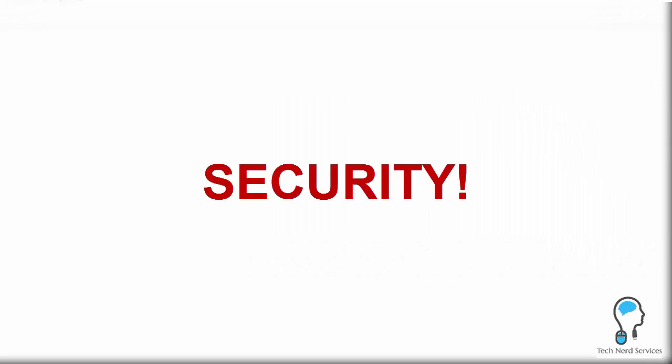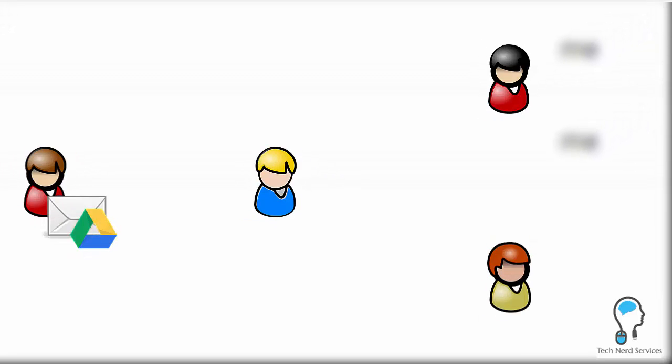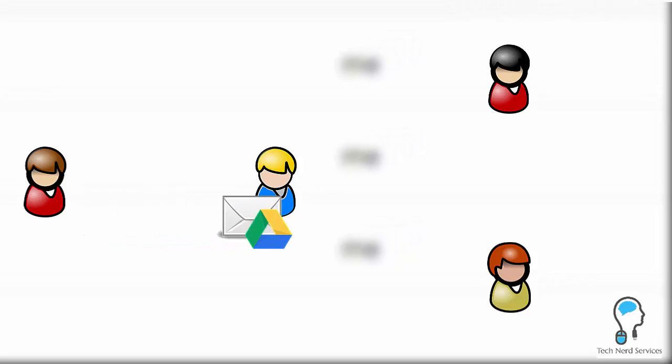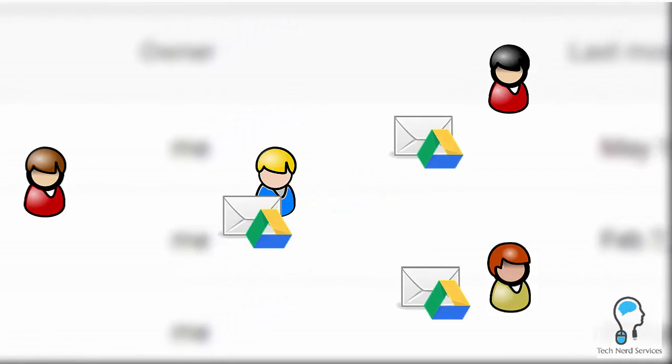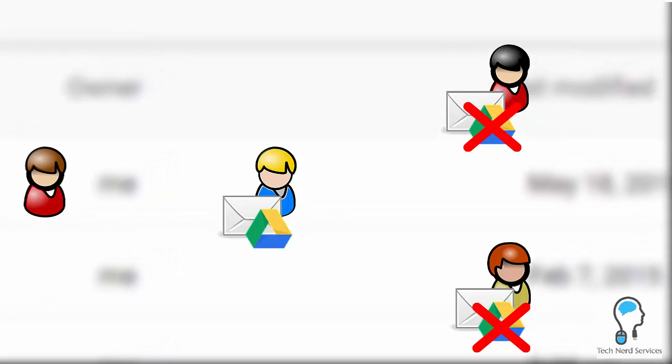With traditional email attachments, you compose your email, attach your file, and it becomes a physical file associated with that email. There were great security risks because once you send that email, you don't know what happens to that attachment — it could be forwarded to any person and they would have access to that sensitive data. Google Drive lets you control very specifically who has access to a file by sharing it to a specific email address, so even if the email is forwarded, the recipient cannot access the file the way a traditional attachment would allow.